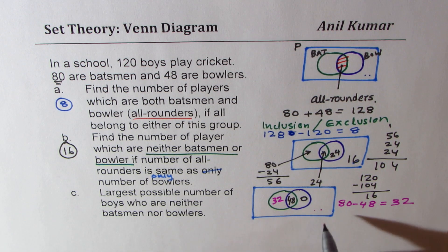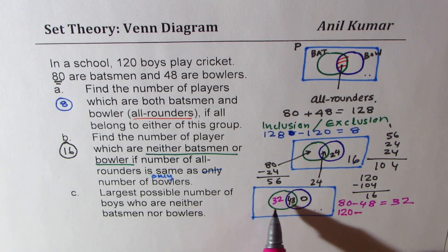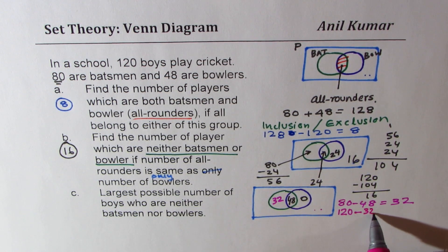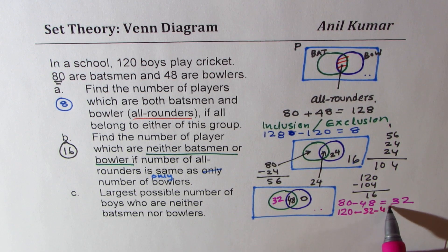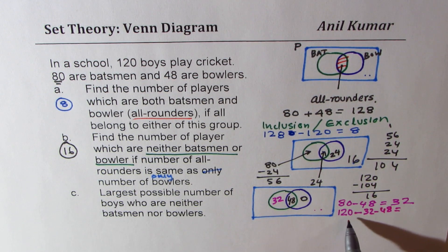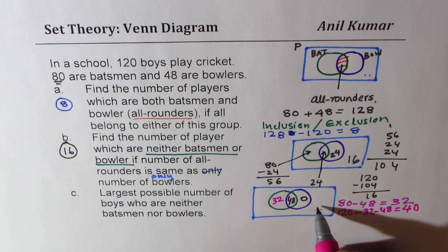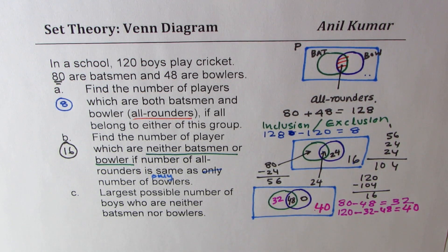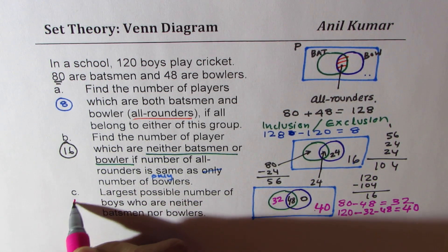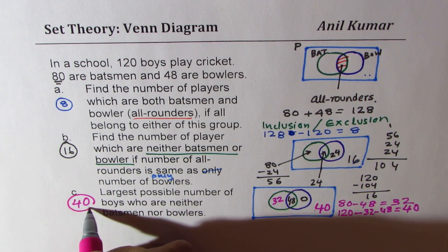So the outside group is 120 minus 32 minus 48, which is 120 minus 80, giving you 40. So that could be the group of specialist fielders outside. The answer for Part C is 40.